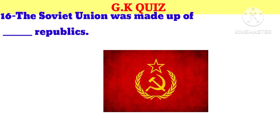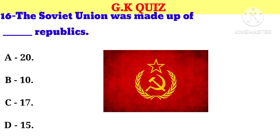Question number 16. The Soviet Union was made up of how many republics? Your options: A. 20, B. 10, C. 17, D. 15. And the correct answer is D. 15.